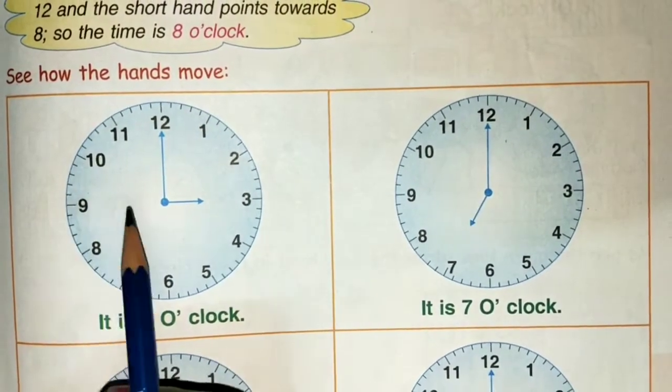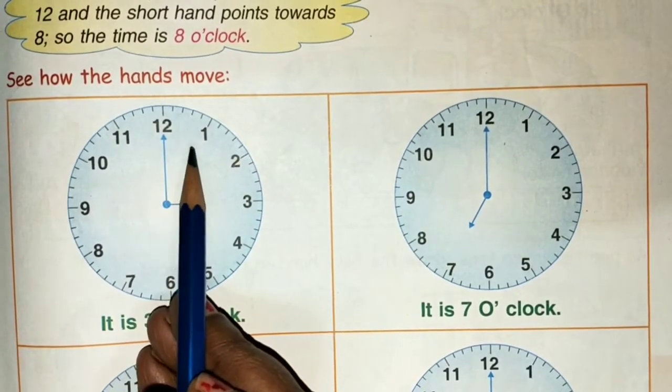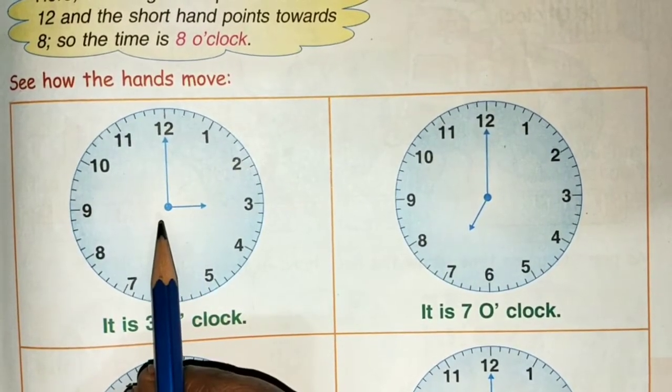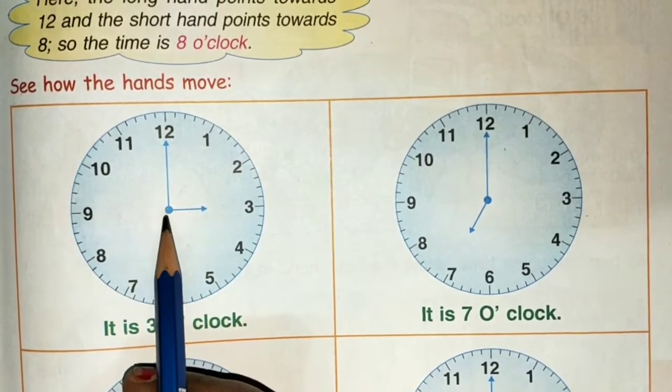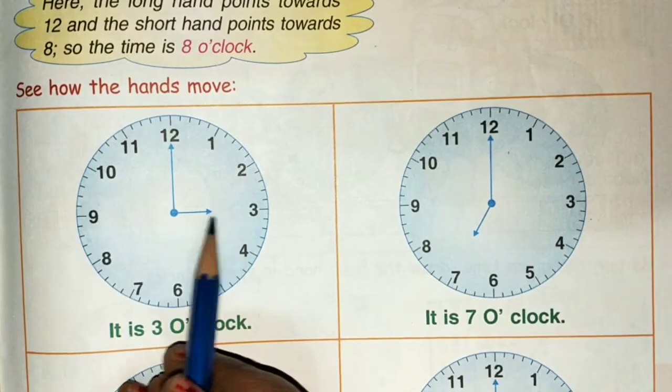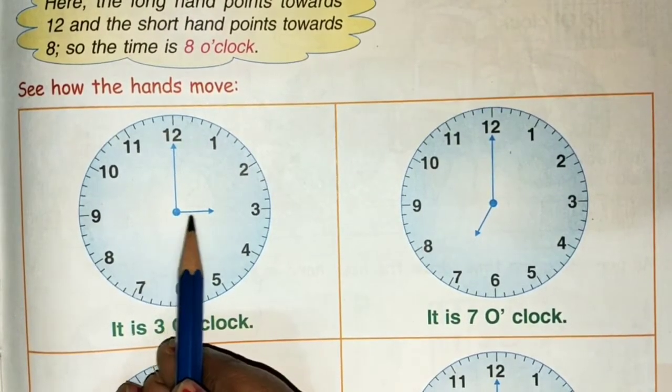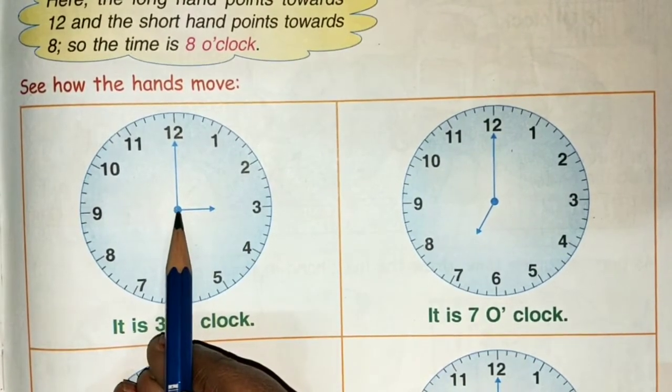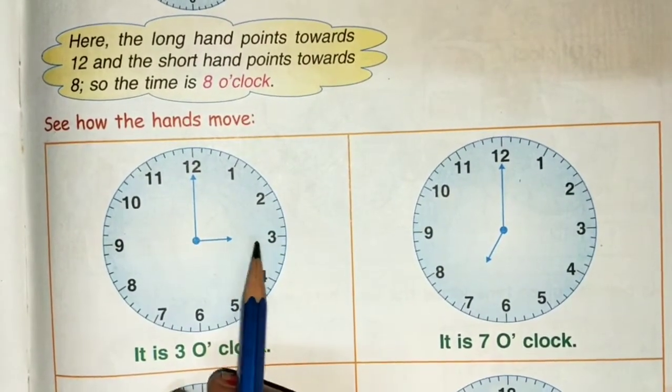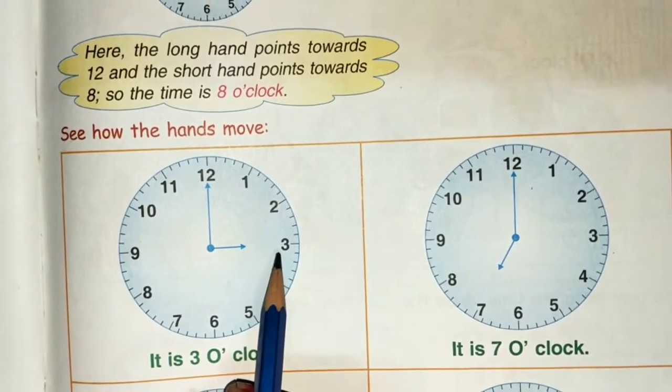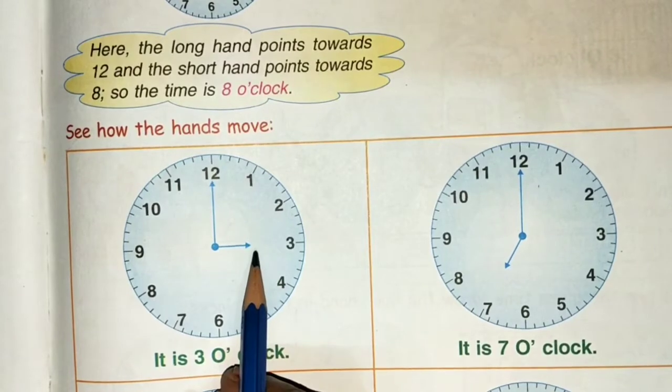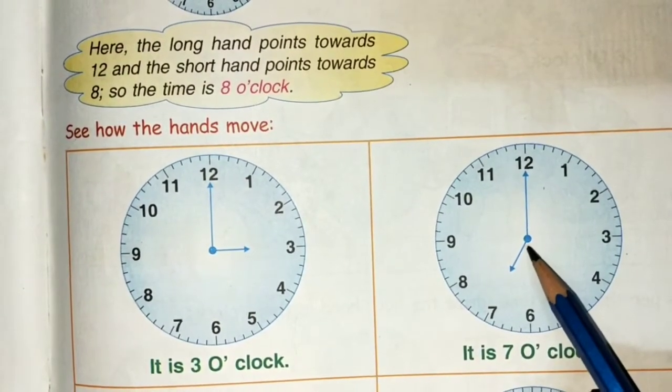We will see how the hands slowly move and how we learn to see time. The clock has two hands: one hour hand and one minute hand. Here the short hand is at 3, the hour hand is at 3. When the hour hand is at 3 and the minute hand is at 12, we understand it is 3 o'clock.